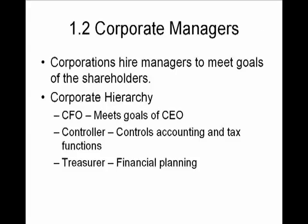Chapter 1, Section 2: Corporate Managers. The way corporations make decisions is by hiring managers to run the day-to-day operations of the corporation and make decisions. The reason for this is because the owners are millions of stockholders and hence do not make decisions themselves. The highest-ranked financial manager is called the Chief Financial Officer, or CFO. The CFO's main function is to fulfill the financial duties requested of the Chief Executive Officer, whose main function is to make the corporation profitable. The CFO is responsible for coordinating the activities and responsibilities of the Treasurer and the Controller. The Controller's duties are related to financial and tax accounting functions, such as managing costs.